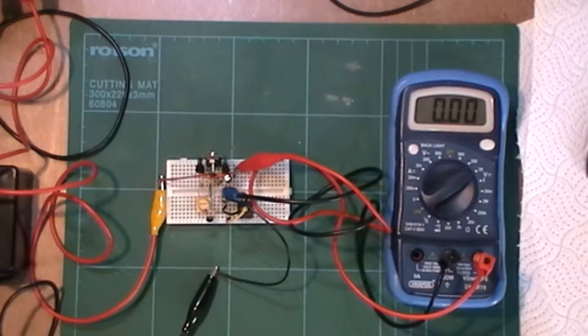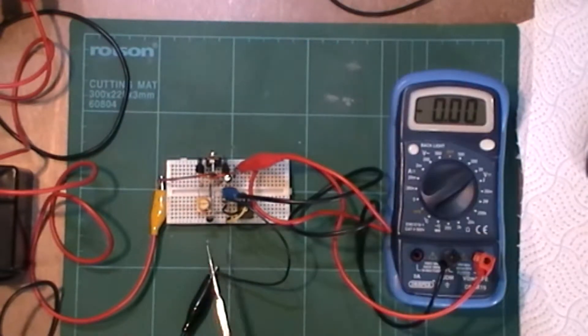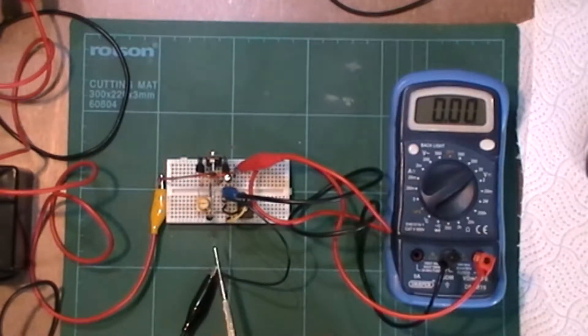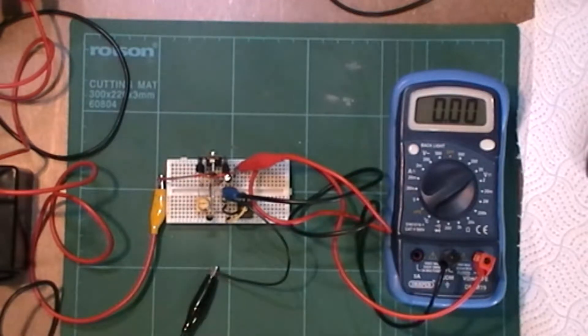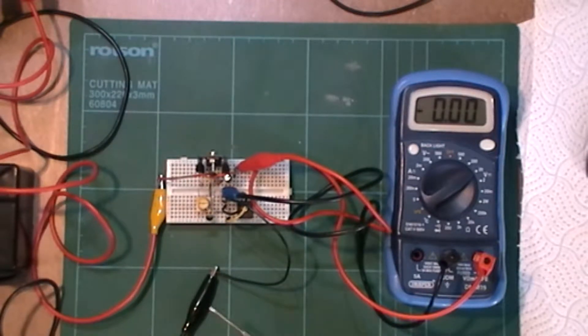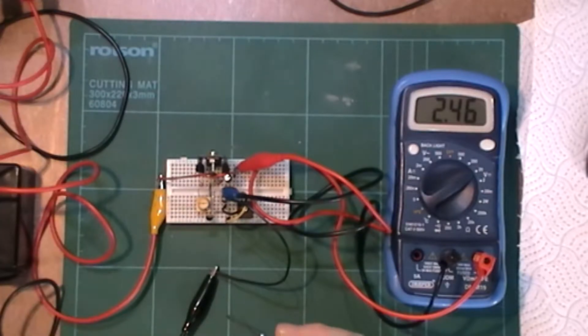So here we go, here's the LM317 on the breadboard. That's the 317 there and this over here is the LM336. Now I've got the power supply turned on. It's on one volt. So obviously you turn it on here. It's below its reference.